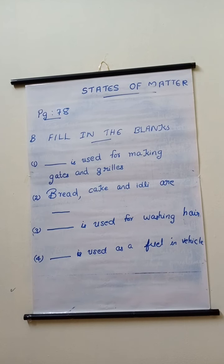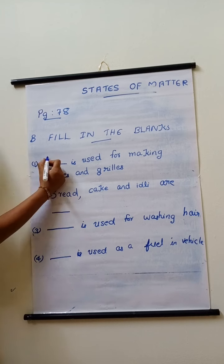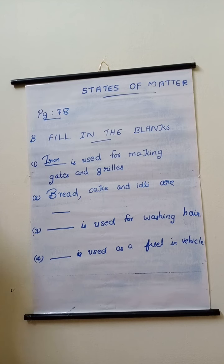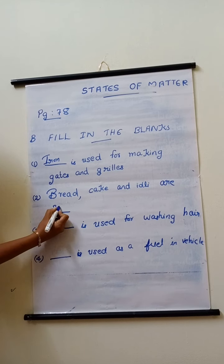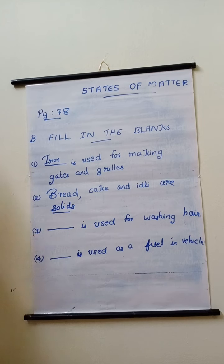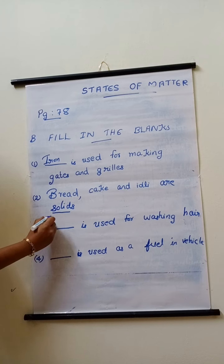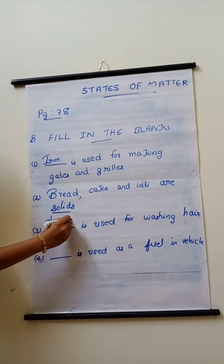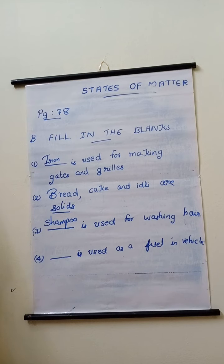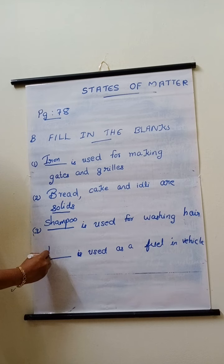Exercise B, fill in the blanks. First one, dash is used for making gates and grills — the answer is iron. Second one, bread, cake and idli are dash — they are solids. Third one, dash is used for washing hair — the answer is shampoo. Fourth one, dash is used as fuel in vehicles — the answer is petrol.